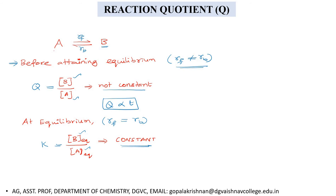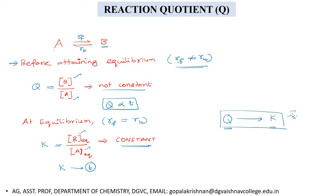K is independent of time — K does not change even if you keep the reaction for hours. This is a very essential point: before attaining equilibrium, the ratio gives you Q; after attaining equilibrium, you get K. Q is not constant, whereas K is a constant. As time progresses, Q will try to attain the value of K.